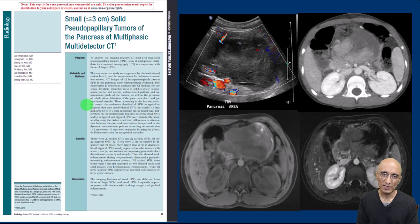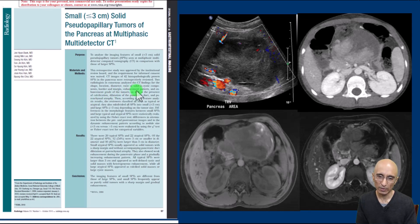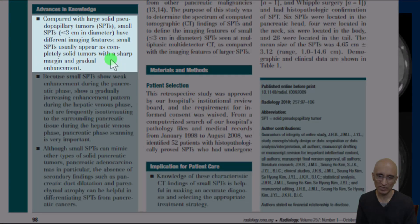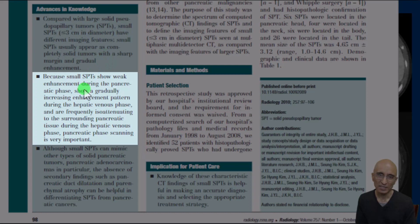Since we are doing a lot of CTs nowadays, solid pseudopapillary tumors can be an incidental finding. This paper assessed the imaging appearances of small pseudopapillary tumors. When the solid pseudopapillary tumor is less than 3 centimeters in diameter the imaging features are different — there are usually no necrotic foci and it can appear like a solid tumor. SPTs typically do not enhance in the pancreatic phase and can become isodense to the pancreatic tissue in the delayed venous phase, so it is important to look for this lesion in the pancreatic phase.